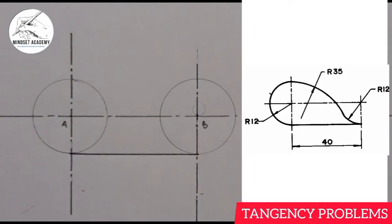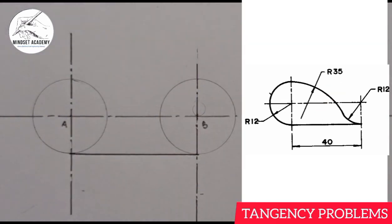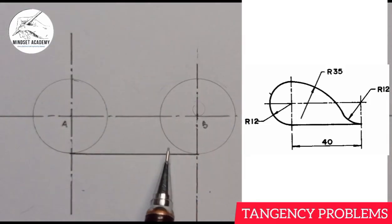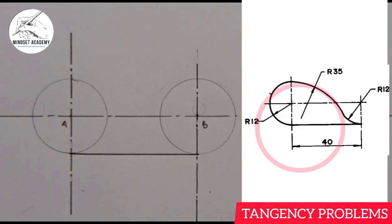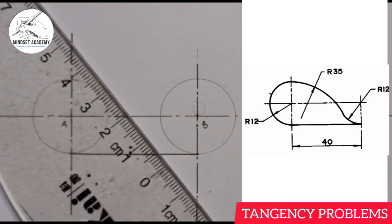Now what do you notice? There's an arc connecting these two bigger circles together. This smaller circle is outside that arc — so because it is external, you're going to add the radius. So if I'm adding 12 plus 35, that will give us 47. So I'm going to take my compass and measure 47 — from 0 to 47 here.